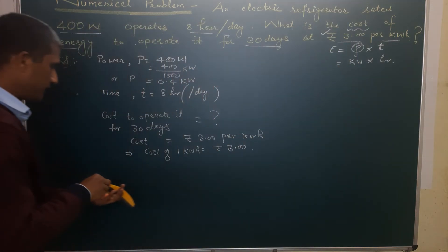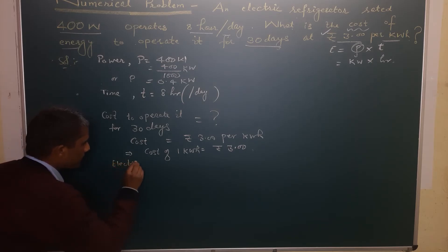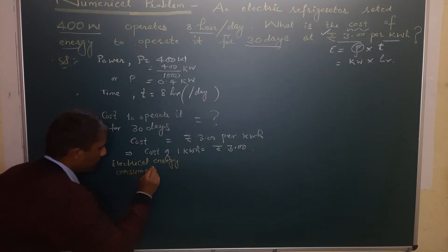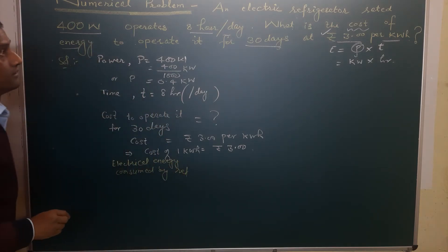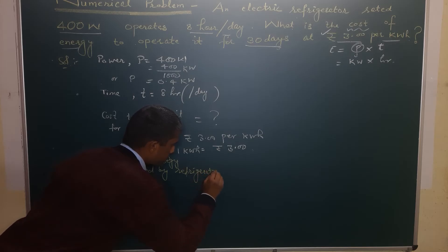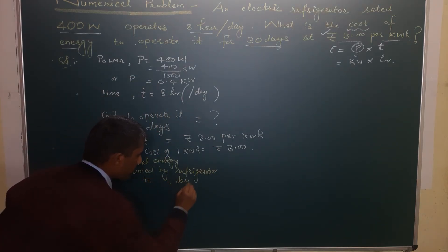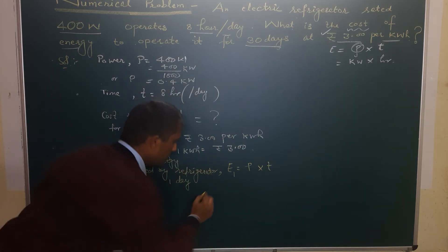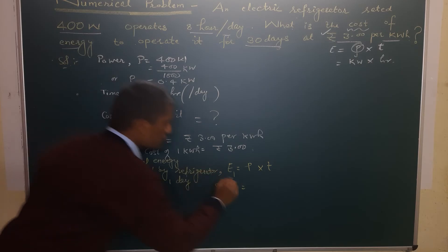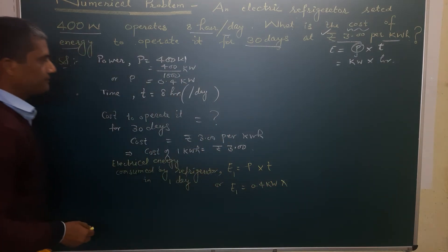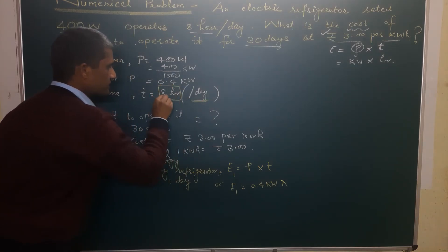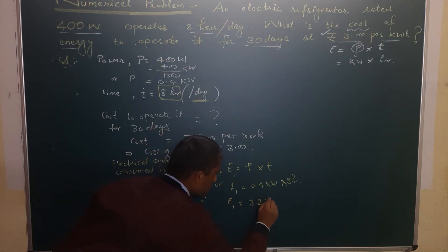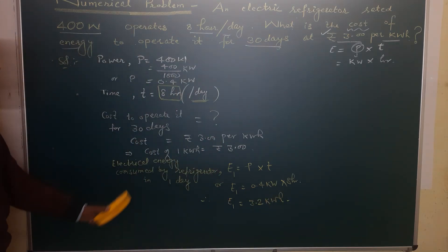Therefore, electrical energy consumed by the refrigerator in one day, let it be E1, is equal to power multiplied by time: E1 = 0.4 kilowatts × 8 hours = 3.2 kilowatt hours. That is the one-day energy consumption.